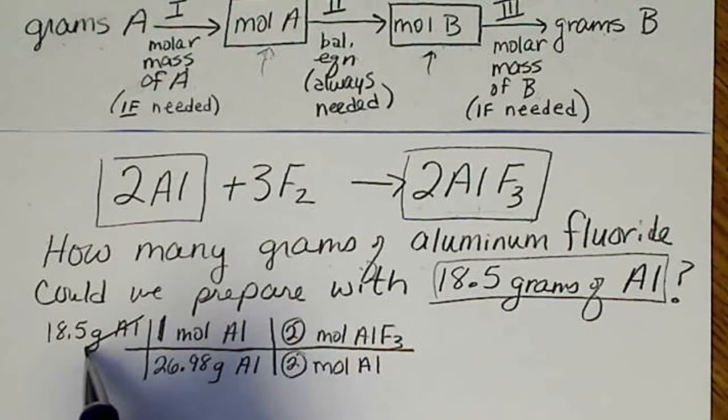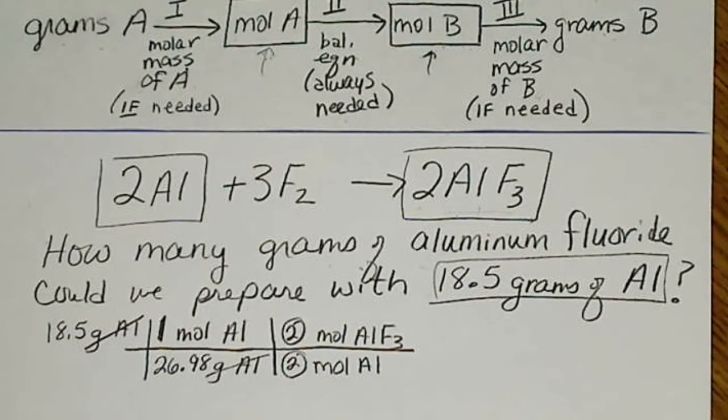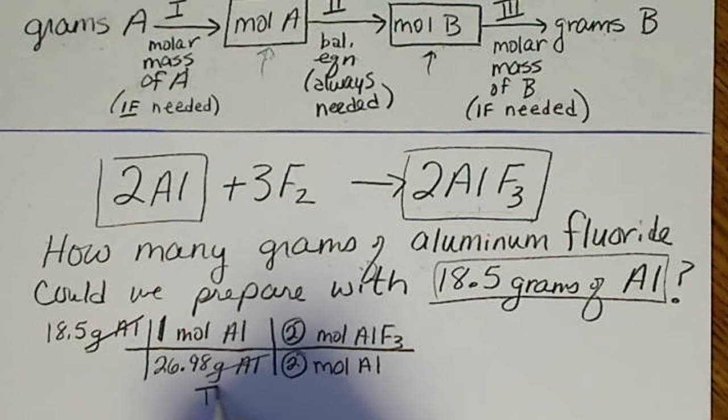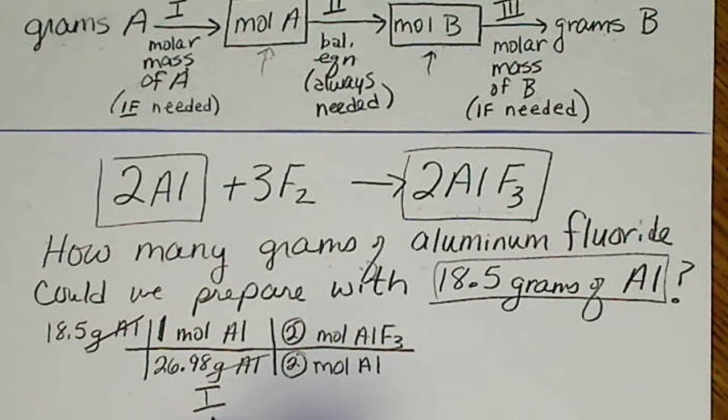So grams of aluminum cancels grams of aluminum. So this was step one, the molar mass of aluminum.